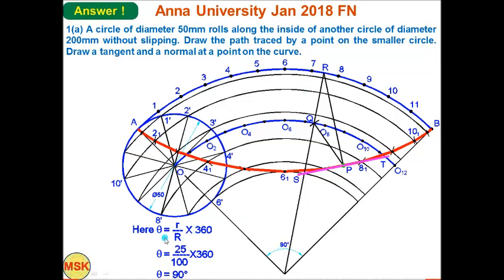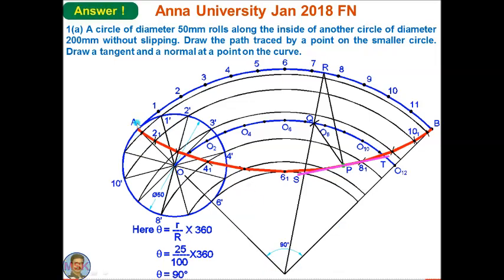There is a formula: θ = (small r / capital R) × 360, where small r is the radius of the smaller circle and capital R is the radius of the bigger circle. So 25/100 × 360 = 90 degrees. Draw the arc whose included angle is 90 degrees. Then divide arc AB into 12 parts and name them 1, 2, 3, and so on.